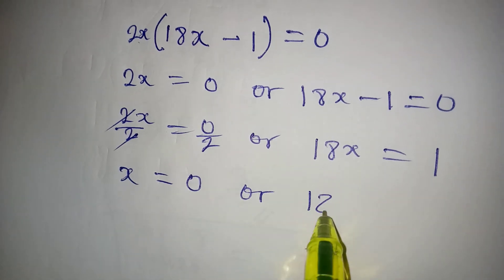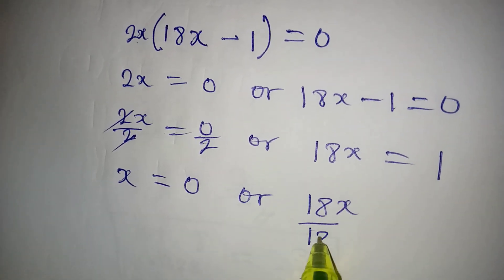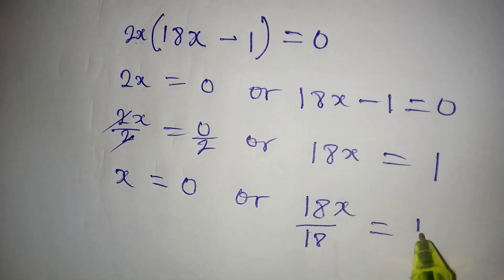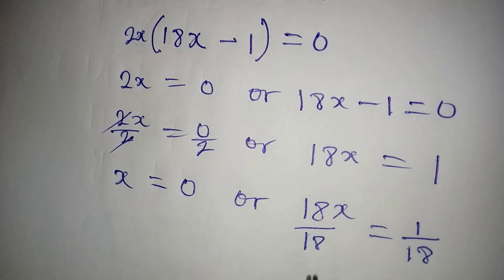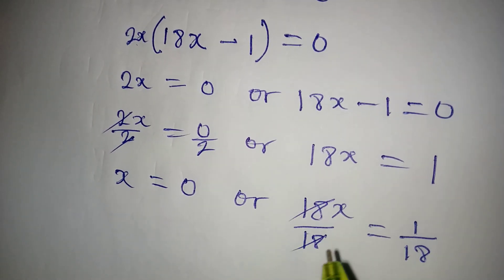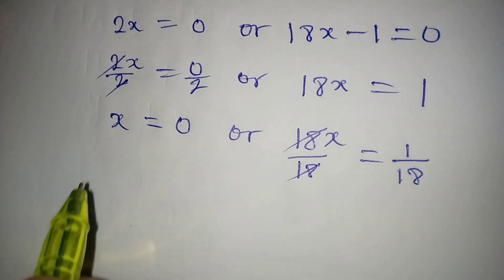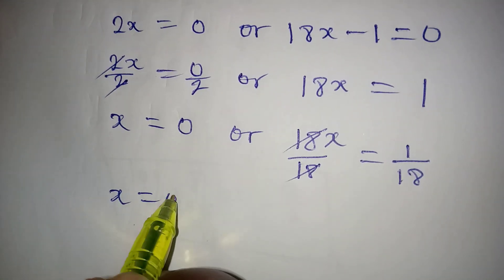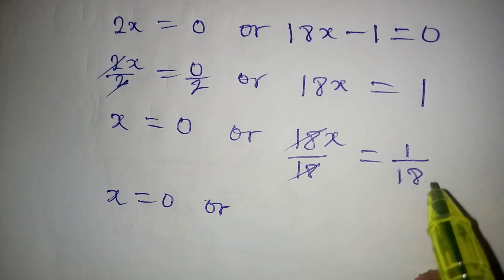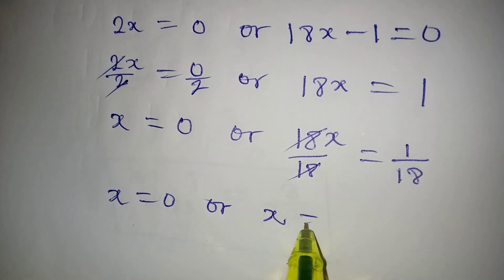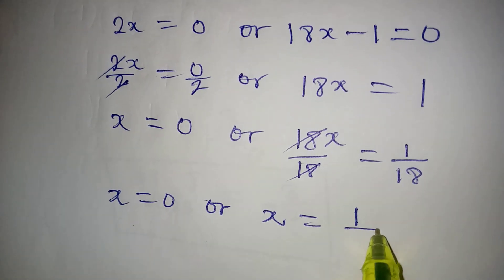Or on this side we have 18x divided by 18 equal to 1 divided by 18. This and this will cancel, so that x here remains 0.